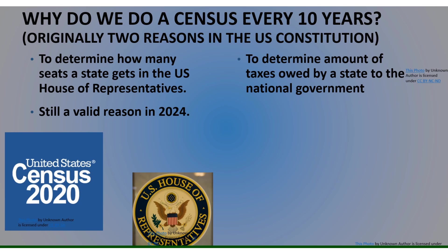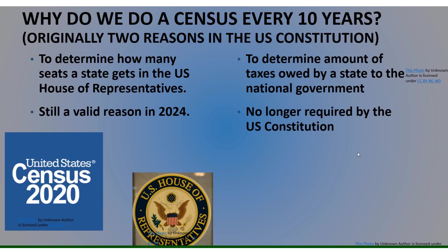There's another constitutional reason why we originally did a census, and this is no longer valid. In the early 1900s, the United States went through an amendment process. In the early part of the 20th century, the states ratified the U.S. Constitution to allow the national government to impose a personal income tax. That required an amendment. However, in the beginning of this country operating under the Constitution, we didn't have an income tax — so how exactly did the national government get its money? It was based upon the census data.